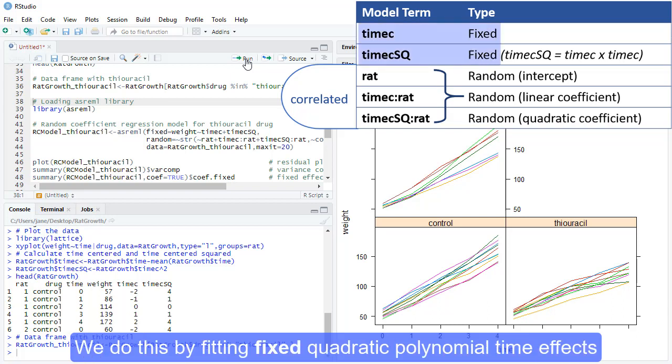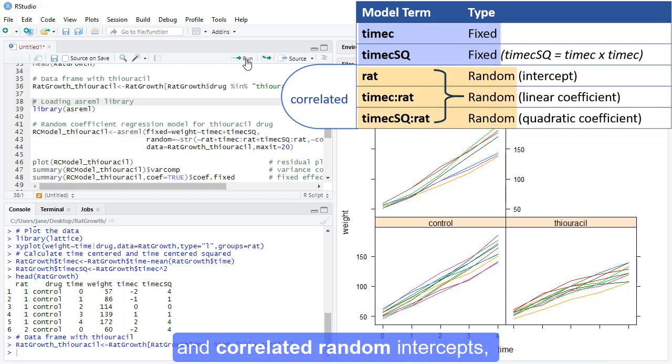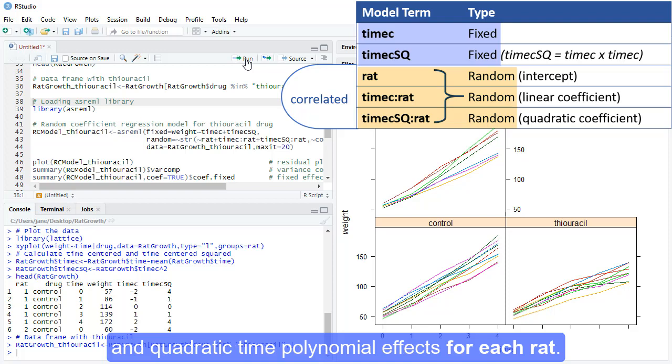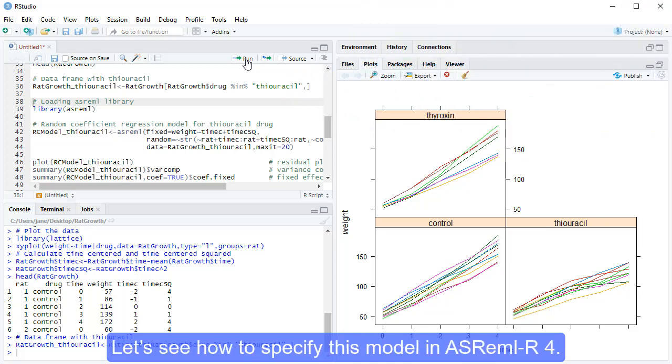We do this by fitting fixed quadratic polynomial time effects, and correlated random intercepts, and quadratic time polynomial effects for each rat. Let's see how to specify this model in ASREML R4.